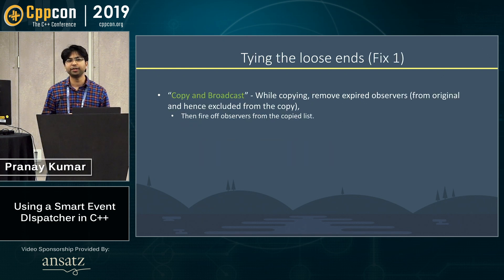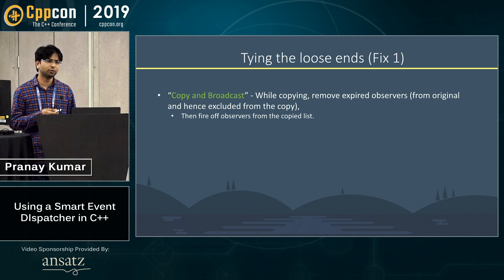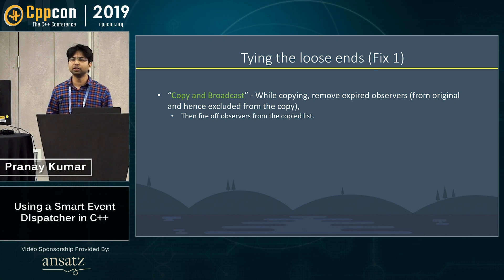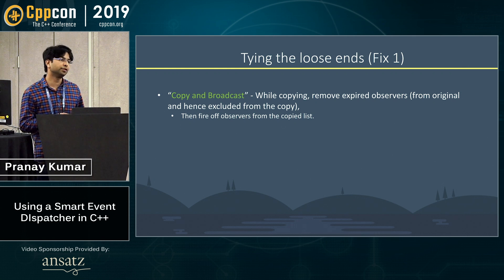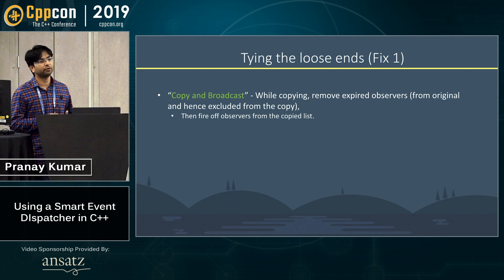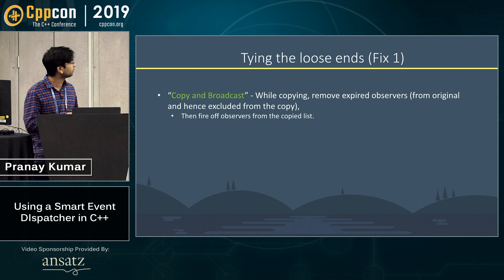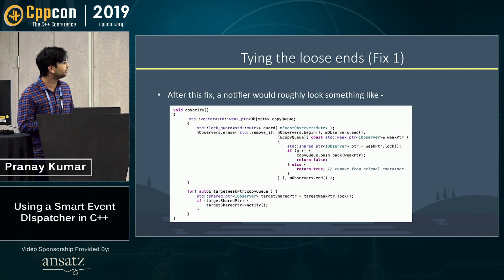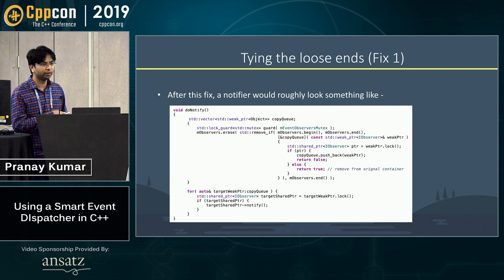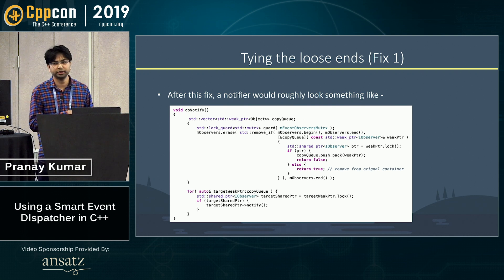There are certain fixes which can be tried — common techniques that should be followed. The first is the copy-and-broadcast mechanism: you should always fire off notifications from a copied list, and while making the copy, remove the dead observers from the source. This fix means you make a copy, remove dead observers that are gone, and then fire off the callbacks from that copied list.